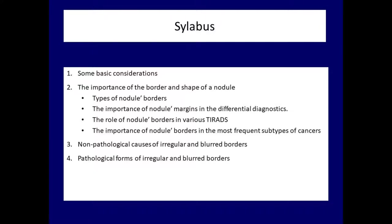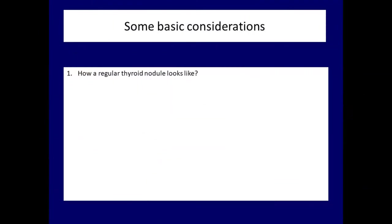We follow the presentation with the differential diagnostics of nodule margins, discussing various forms of ill-defined and irregular borders. First, it should be noticed how a regular thyroid nodule looks like. It lasted more than 10 minutes to find nodules to demonstrate typical examples of normal borders. I had to surf through dozens of images because almost every nodule presents some irregularities. This difficulty points out to one of the most important issues, which will be discussed later: there is no exact definition of normal and abnormal margins.